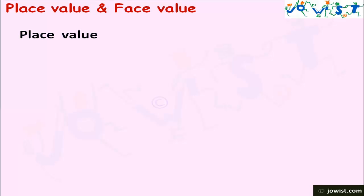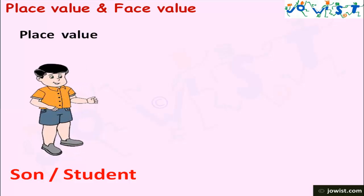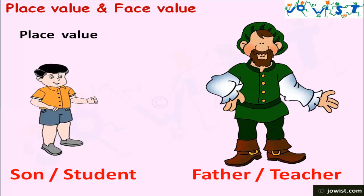With the change of place, Tom becomes either son or a student, son at home and student at school. And Mark becomes father or a teacher. Father at home and teacher at school. So, the face value remains same but the place value changes with the place.